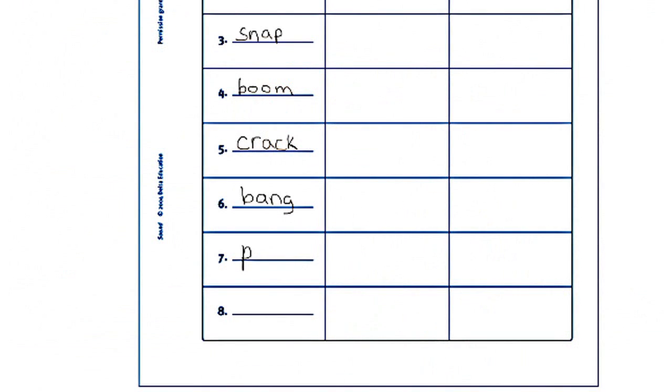Next, give each student a copy of Activity Sheet 1, Part A. Instruct them to record in the first column of the chart on the Activity Sheet the different sounds their team produced.